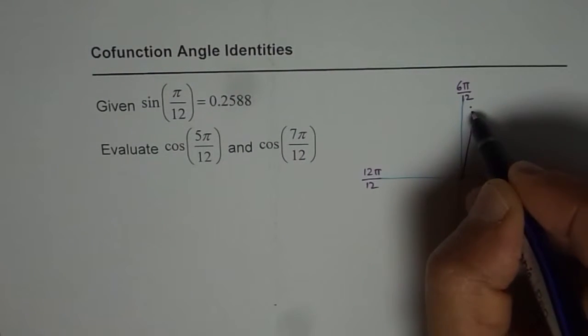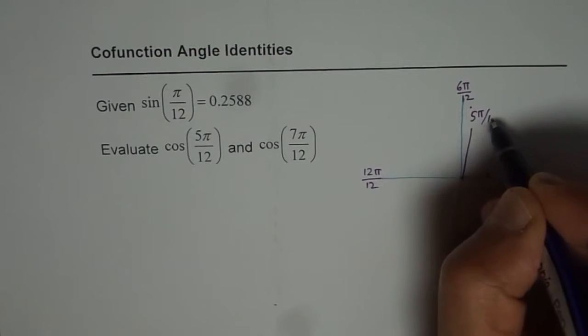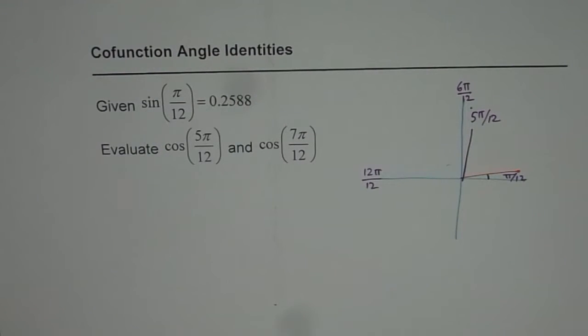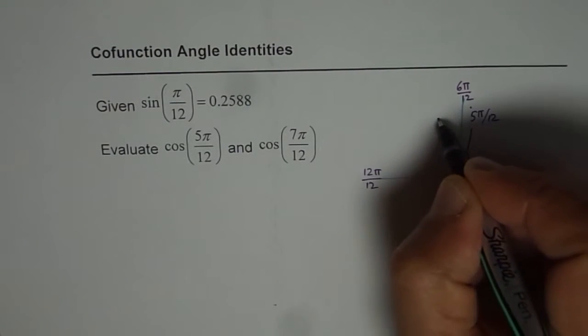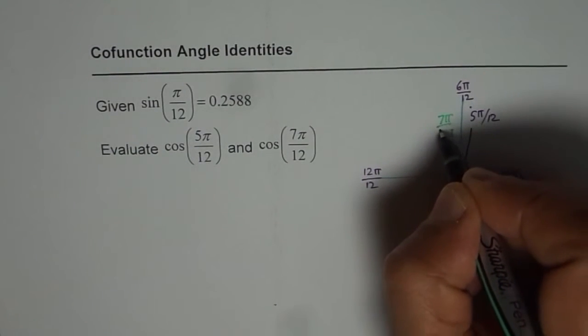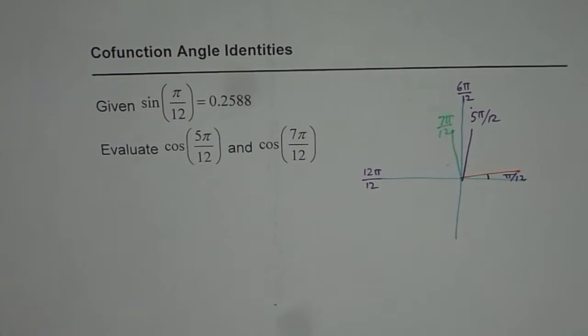So that is 5π/12 and 7π/12, let me use a different thing, will be on the left side. Kind of here, right? So that will be 7π/12 for us. So that diagram gives you an idea as to how we should be solving this question.